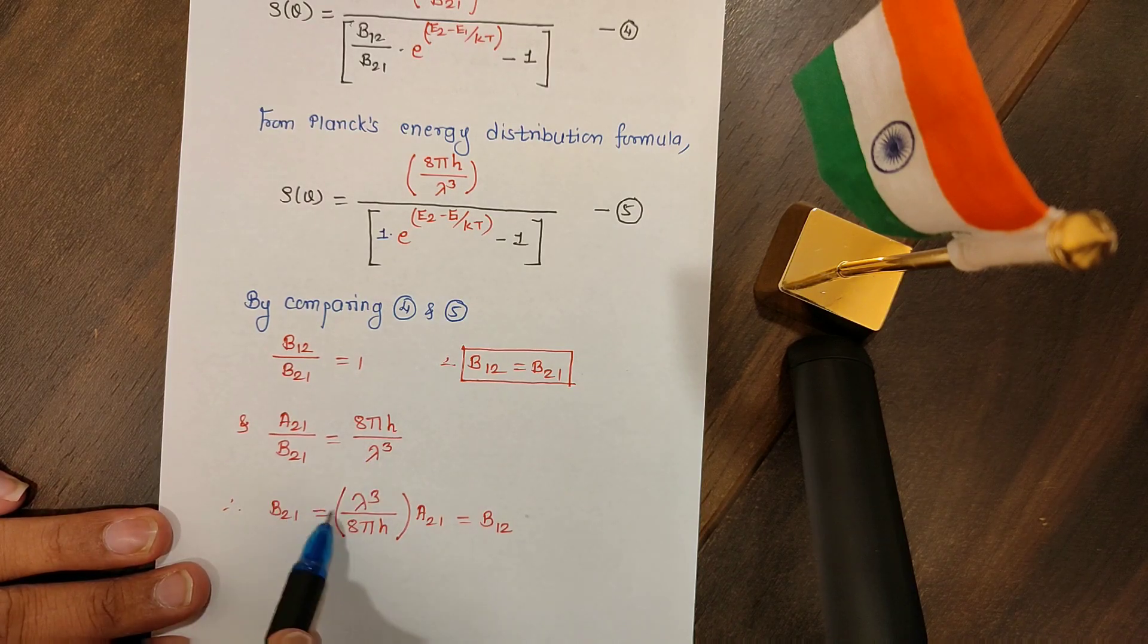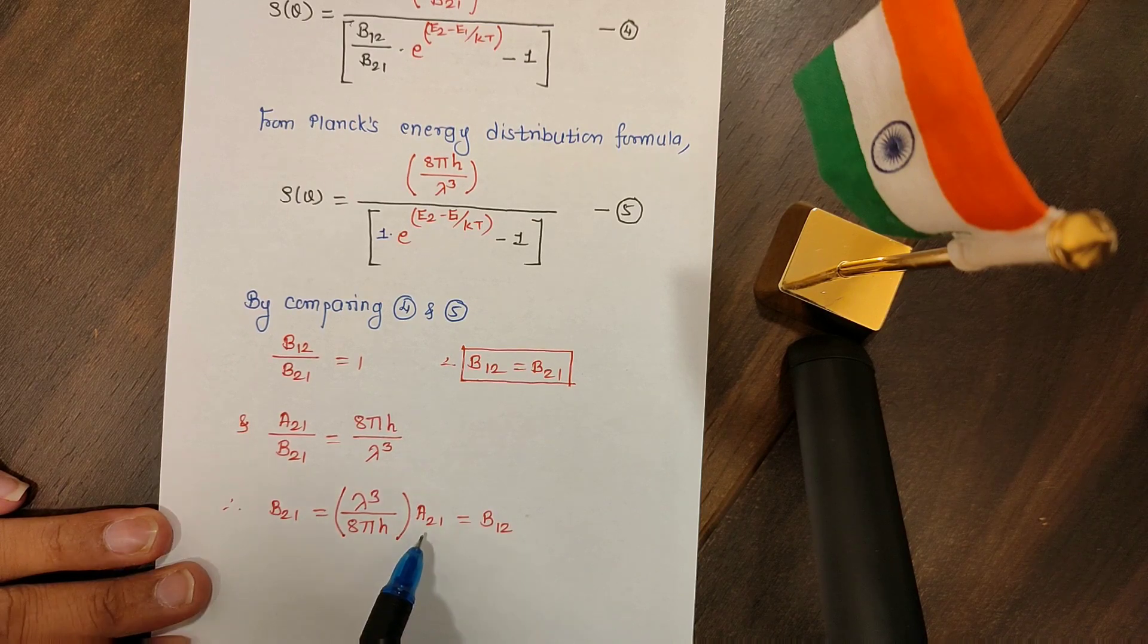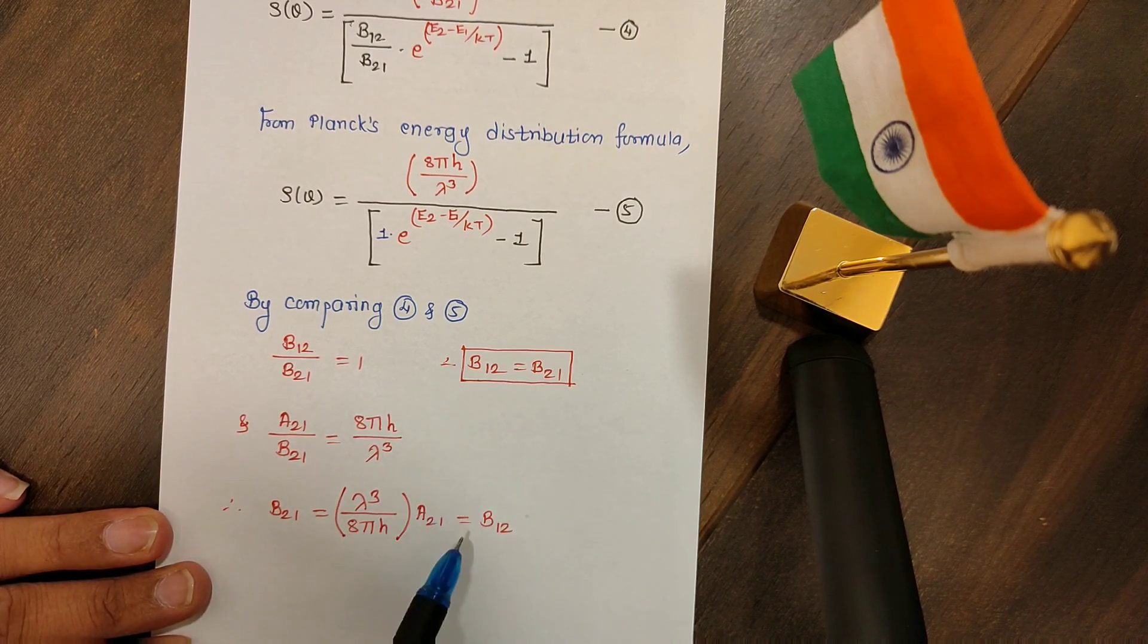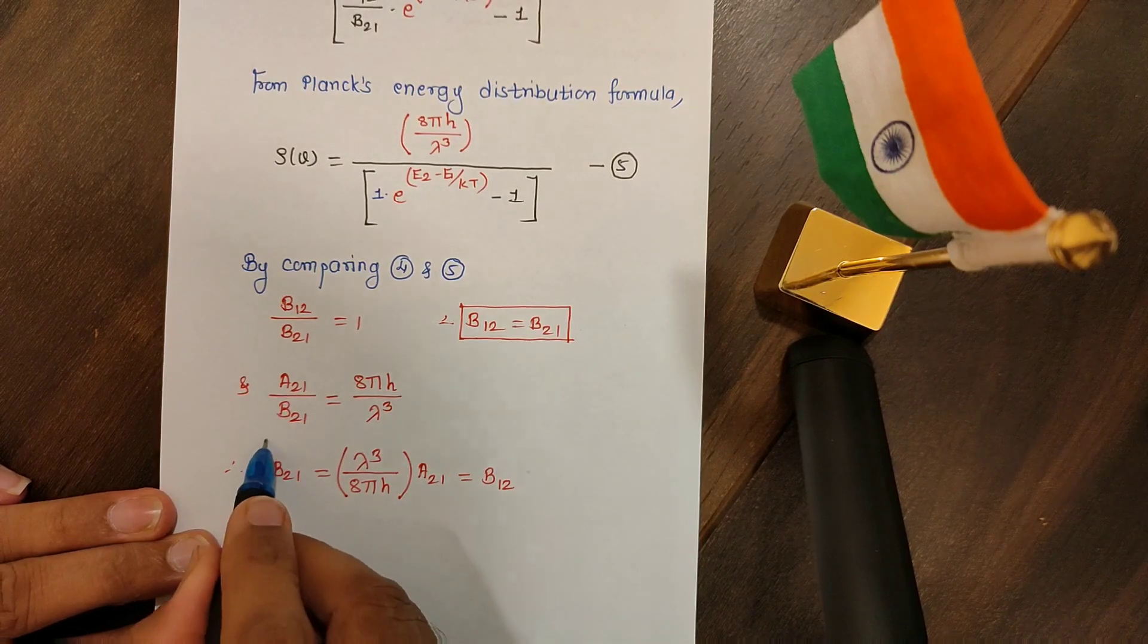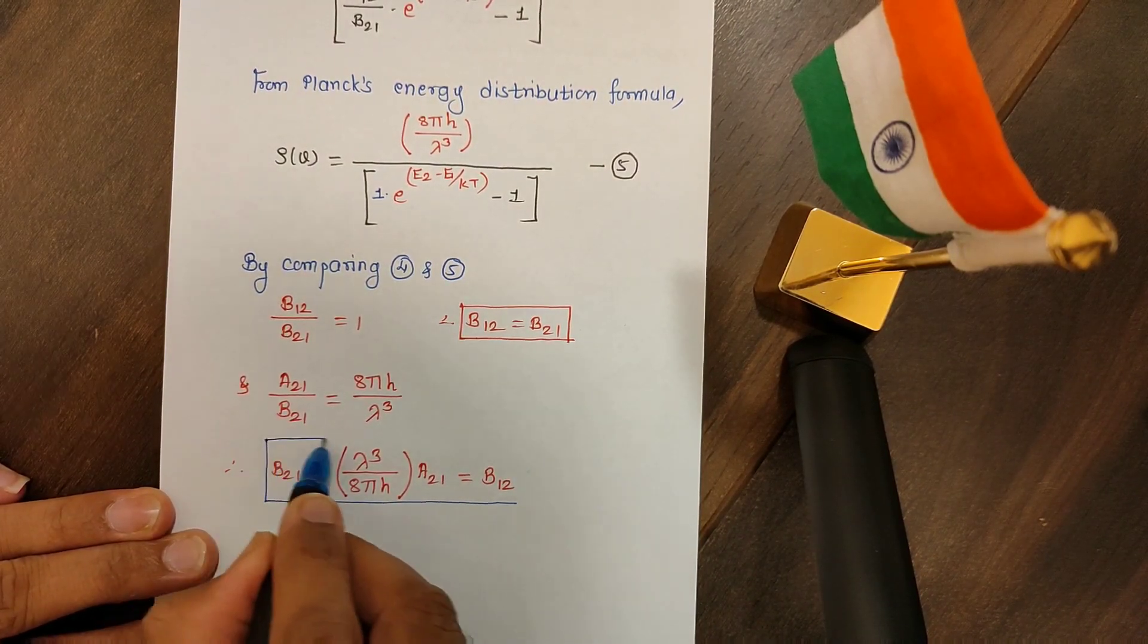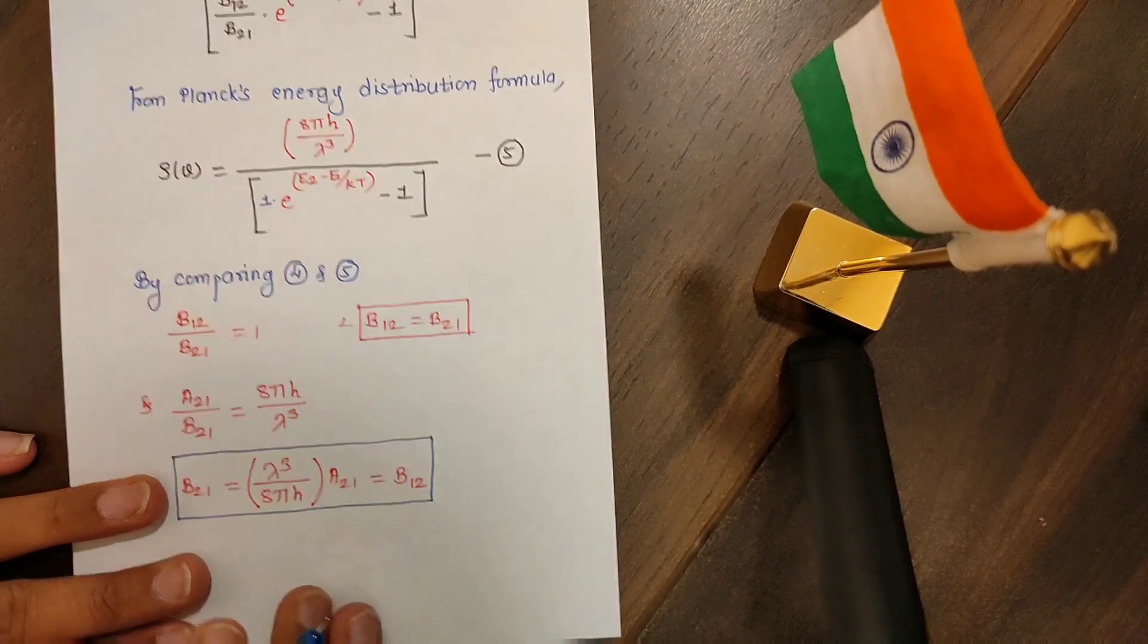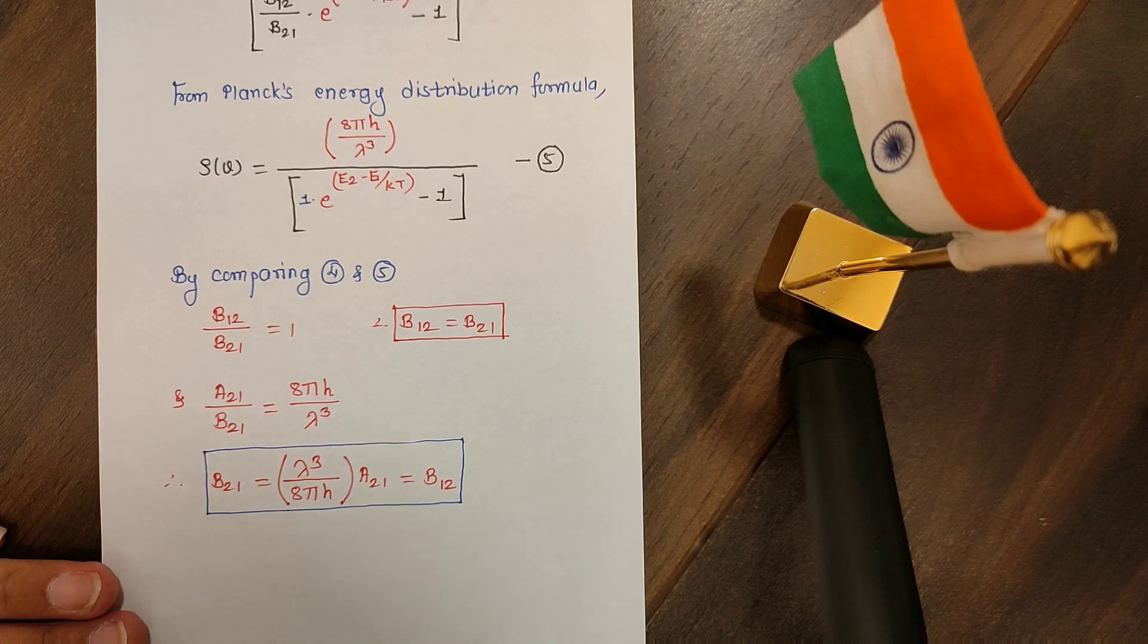From here we can write b21 is lambda cubed over 8 pi h into a21. But b21 is also equals to b12, so this gives me the relation between the three Einstein's coefficients which are used in the study of laser. I hope the mathematical work is clear for you all. Thank you.